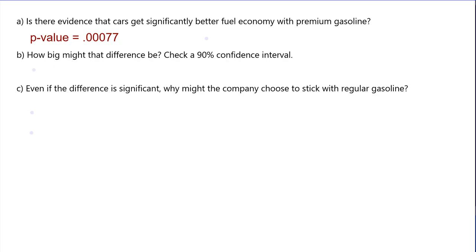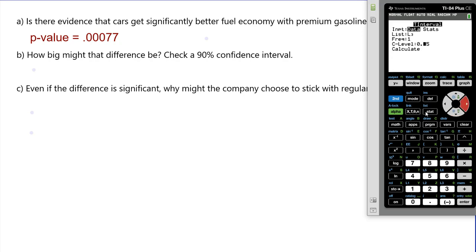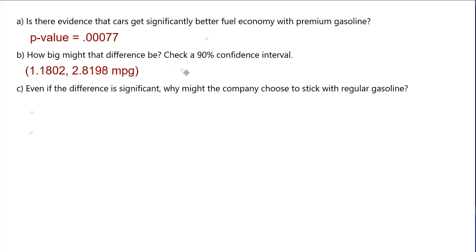Create a 90% confidence interval. Now that we said there was a difference, what do we think the difference is? Do a T-interval — we still have the data, 90%, calculate. We think the average difference between premium and regular is anywhere between 1.2 and 2.8 miles per gallon improved when you run premium. Even with a 90% confidence level — that's 5% on one side, equivalent to a 5% alpha level — zero is not contained in the interval, so it's significant. With our P-value definitely less than 5%, we would have rejected anyway.